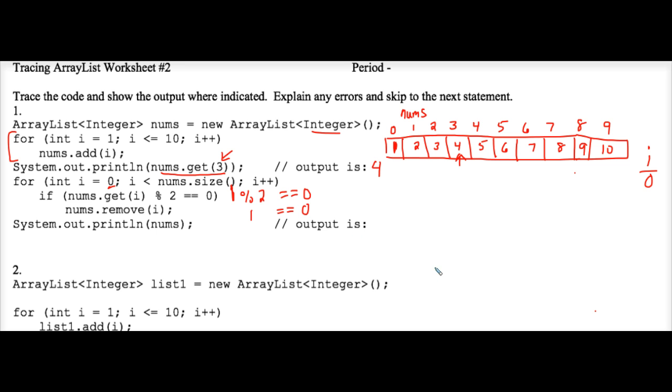To understand why a small number modded by a big number is always equal to a small number, just do the long division. 1 divided by 2 leaves a remainder of 1. So that if statement was false. Therefore, we do not remove anything at this time.